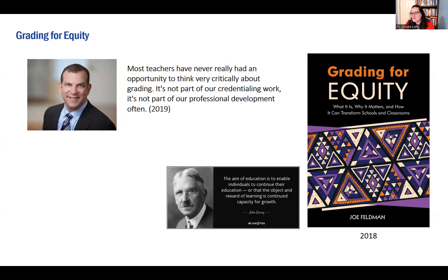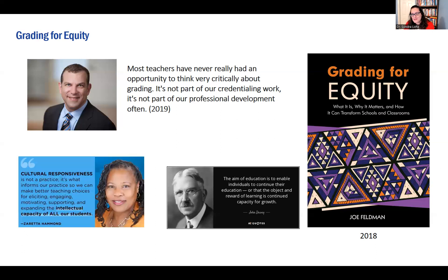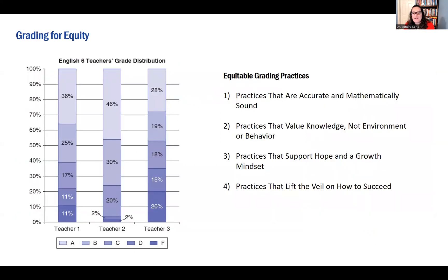His work is very highly influenced by John Dewey, and I also find it very similar to Zaretta Hammond's work in her book Culturally Responsive Teaching and the Brain, which we just finished a summer book chat on. An example of Feldman's work began with a study he did in his own school building, where he looked at three teachers teaching sixth grade English, examined the way their grades were distributed, and said there's something we need to examine more closely — why are teacher one, teacher two, and teacher three grading so differently?